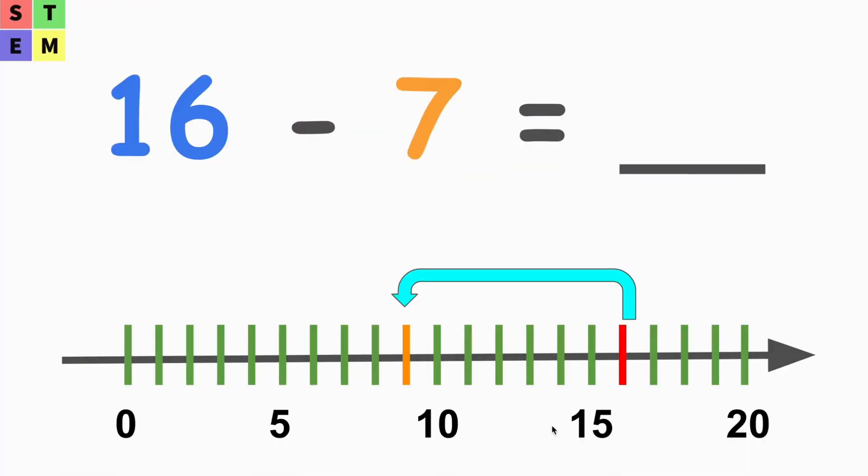Now let's take a look at what we have here. We have 16 minus 7. We need to find out what equals 16 minus 7.